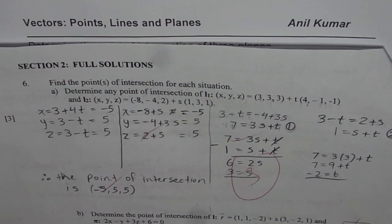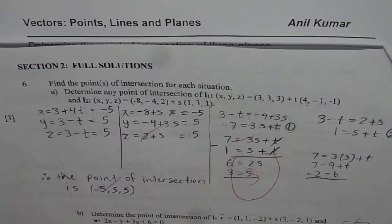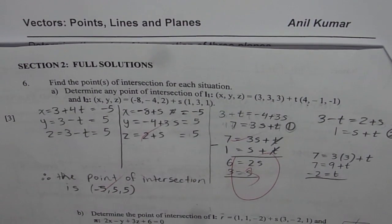I am Anil Kumar sharing with you questions from the test paper. This is from Vectors, intersection of points, lines and planes. We have discussed intersection of two lines, and we have discussed intersection of a line with plane. Those were question number 6A and B.